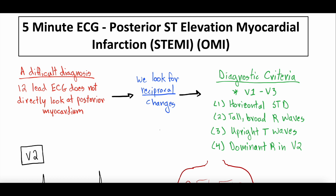Posterior ST elevation myocardial infarction is actually a difficult diagnosis to make on a 12-lead ECG. The reason is that the ECG doesn't directly look at the posterior myocardium. When we do a 12-lead ECG, the leads — V1 through V6 plus the limb leads — are all on the anterior aspect of the patient. So because of that, we don't see the posterior myocardium directly with a standard 12-lead ECG.